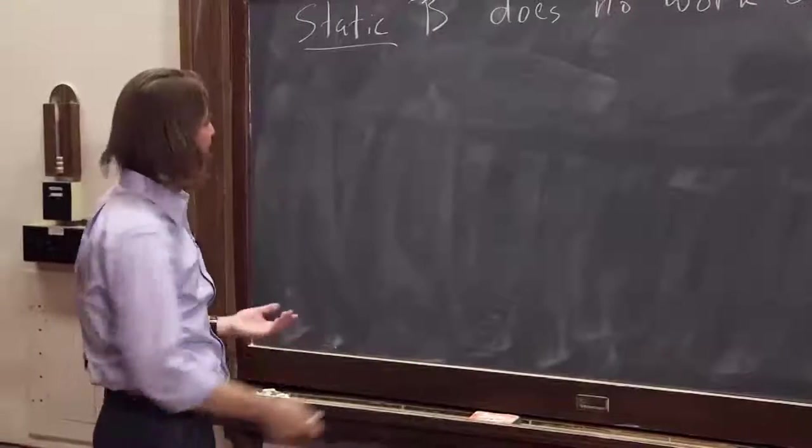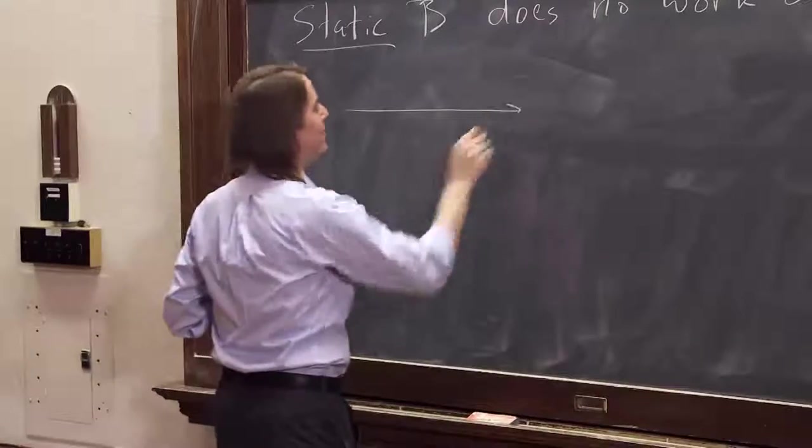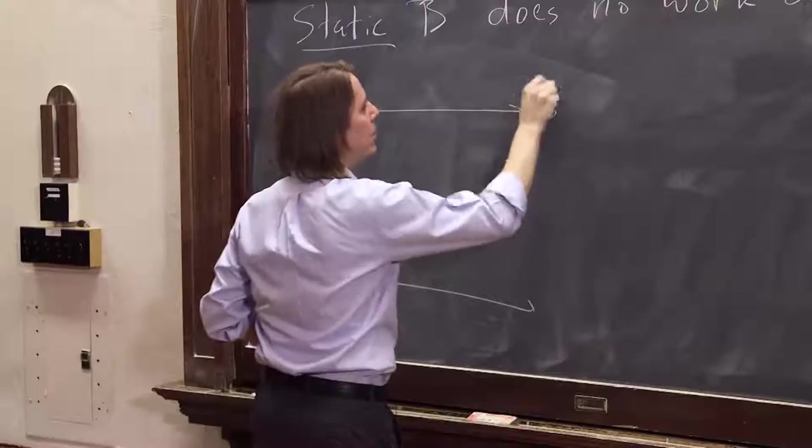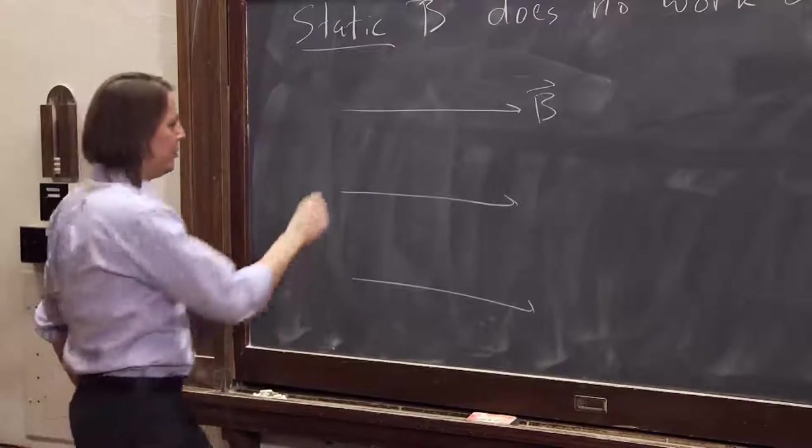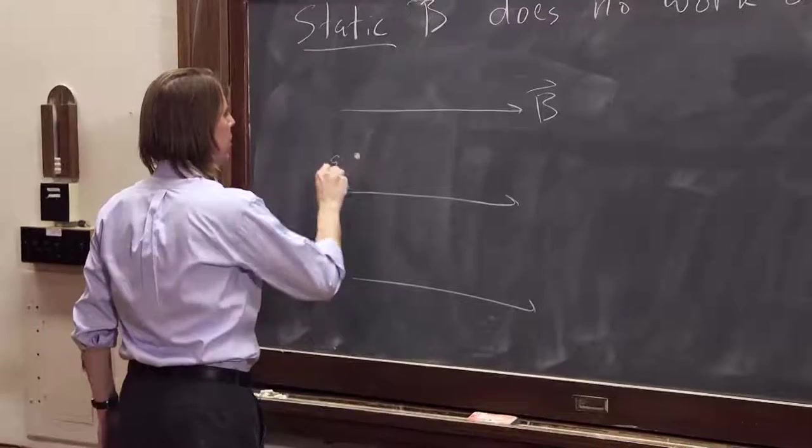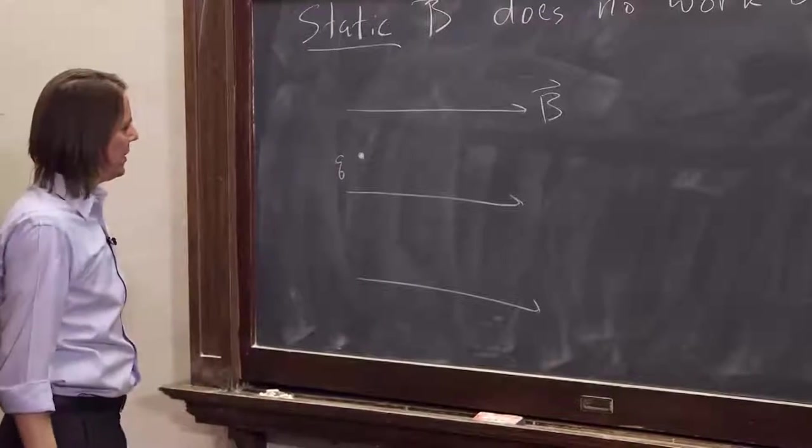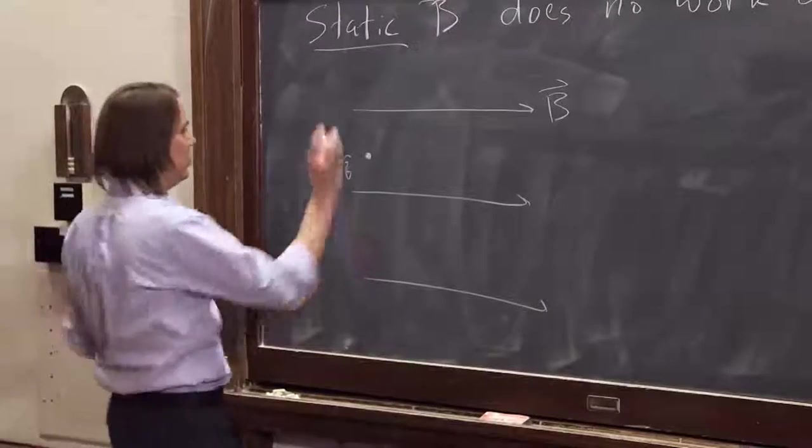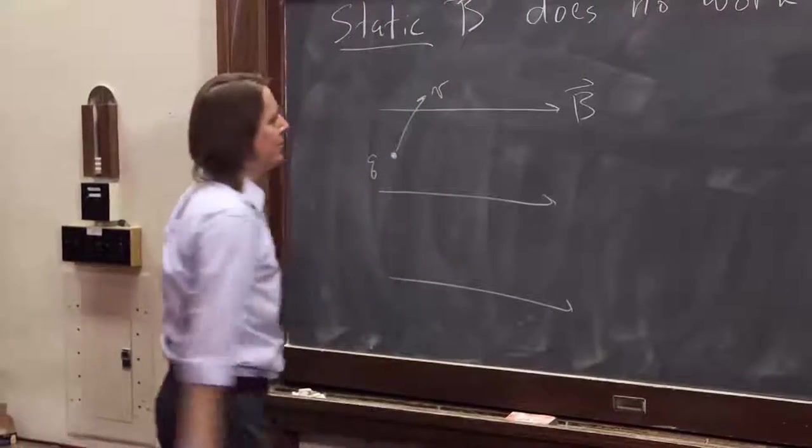For example, the first way it gets a little bit more complicated is let's have the B field go to the right. B field that way. Let's put a charged particle in here, Q, and give it a velocity. Let's be crazy and not make it perpendicular to B. Let's make it be like that.